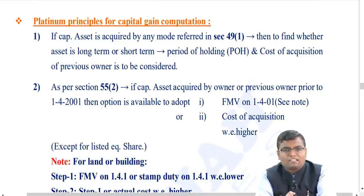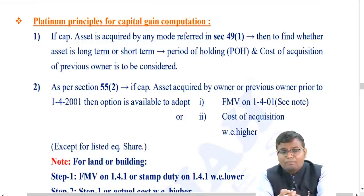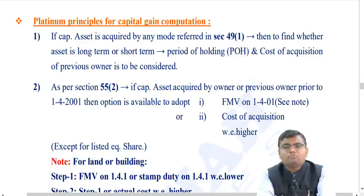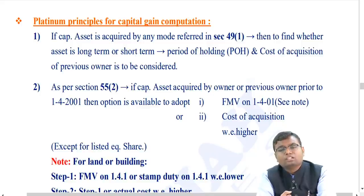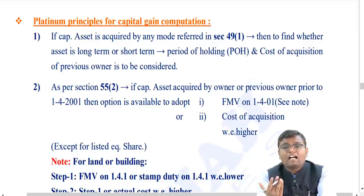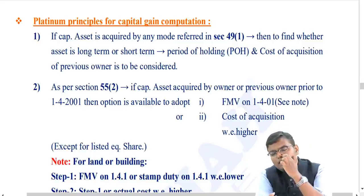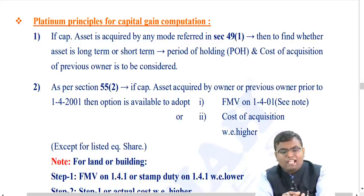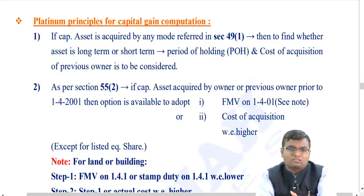Platinum Principle 2 - Section 55(2): if any asset was acquired prior to 1st April 2001, the cost of acquisition is the actual cost or fair market value on 1st April 2001, whichever is higher. This additional concession is given by the government. Indexation is then applied on this higher cost.